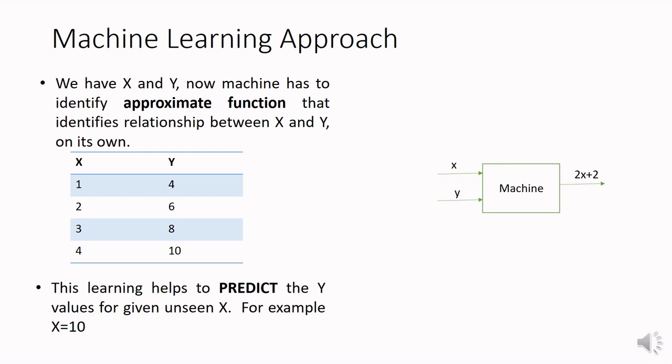So machine learning program will take two inputs from the user: that is x, the actual input, and y, the actual output. What does machine learning program have to do? It has to identify the rule, that is 2x plus 2. Now this learned rule will be used for further predicting the values.